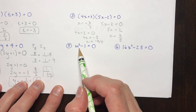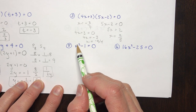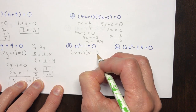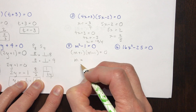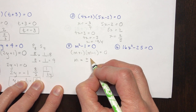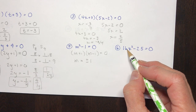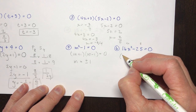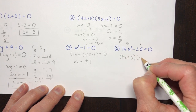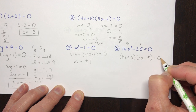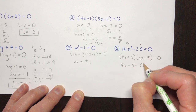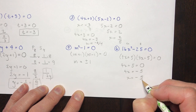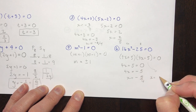Number five — a difference of squares! So this is (m plus 1)(m minus 1) set equal to zero. So m equals plus or minus 1. Another difference of squares: the square root of the first term was 4x, square root of the second was 5. So (4x plus 5)(4x minus 5) equals zero. Solving: x equals minus 5 over 4, and for the other bracket x equals 5 over 4.